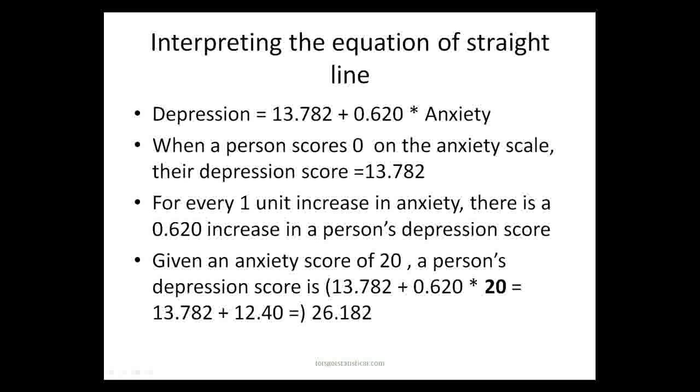So we can do three things from this. We can discuss the Y intercept, we can discuss the gradient and we can also given a score, substitute for another score. So the first comment we can always say is when a person's independent variable, in this case anxiety scale is 0, their dependent variable, in this case depression score, is equal to the Y intercept, in this case 13.782. We can also say for every one unit increase in the independent variable there's a gradient increase in the dependent variable. So in this case it's anxiety and the gradient was 0.620 and the dependent variable was depression. We can also substitute into the equation at the top for different levels of anxiety to solve for a depression score. So given an anxiety score of 20, the person's depression score is 26.182.